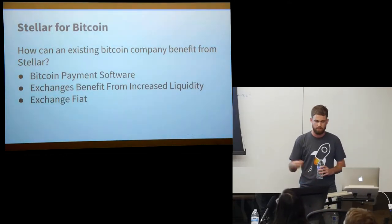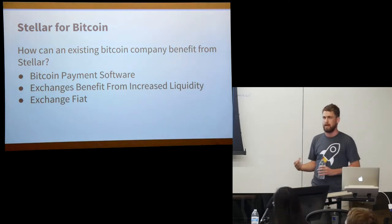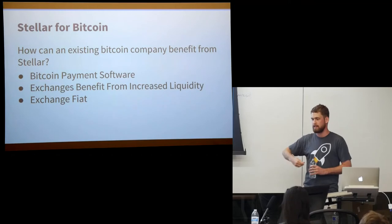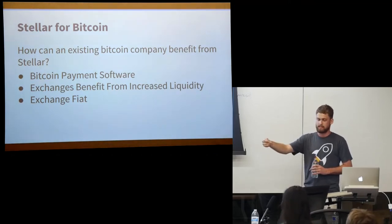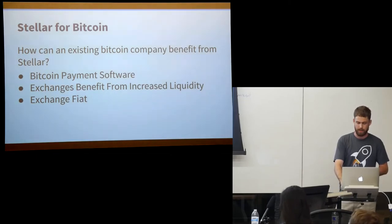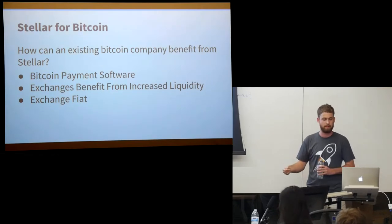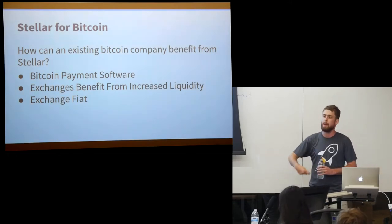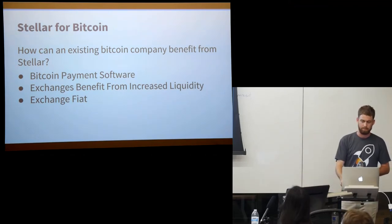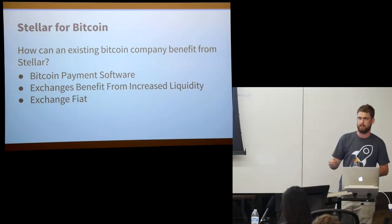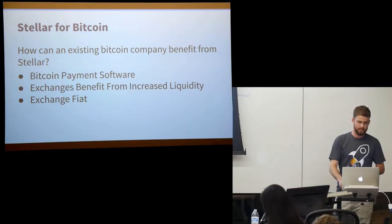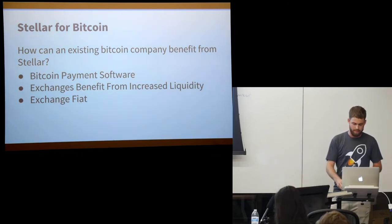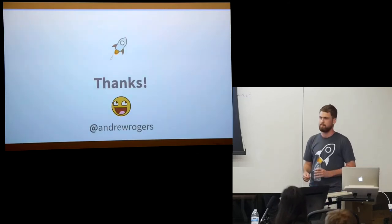To close, some ideas on how existing Bitcoin companies can benefit from Stellar integration. If you run Bitcoin payment software, it's beneficial to integrate with a system that lets that software be used not just to send Bitcoin to other Bitcoin holders, but Bitcoin to anybody, or receive Bitcoin from any source. Exchanges building world-class exchange software benefit because now they can trade fiat as well as Bitcoin, and they benefit from increased liquidity by building on a distributed exchange rather than relying only on liquidity within their walled garden.